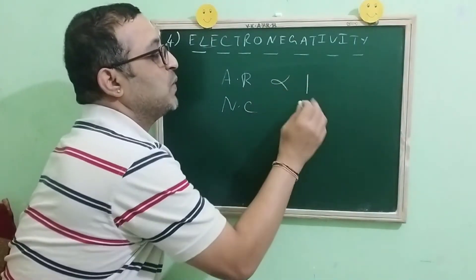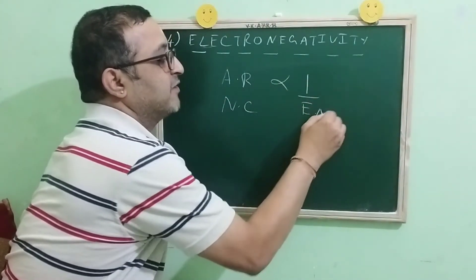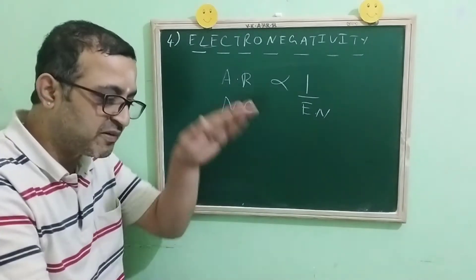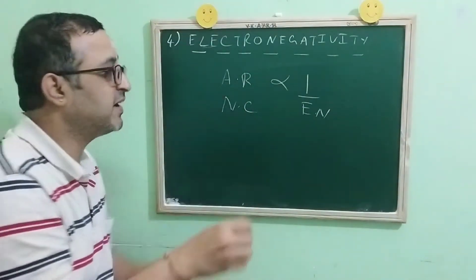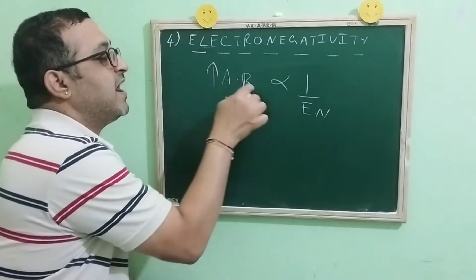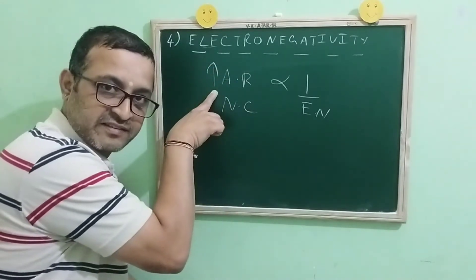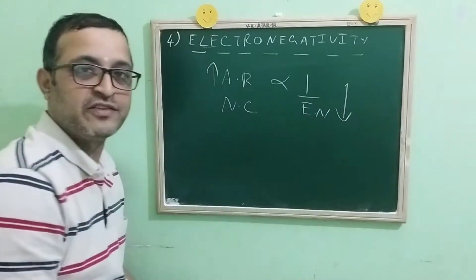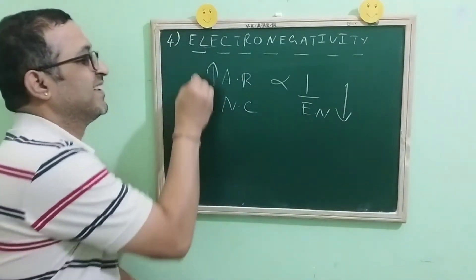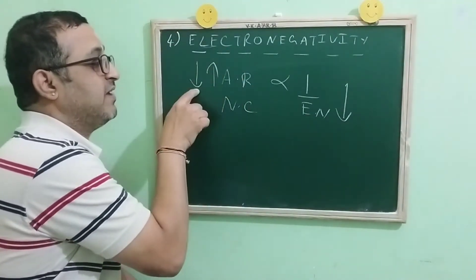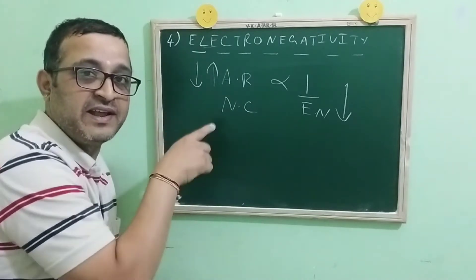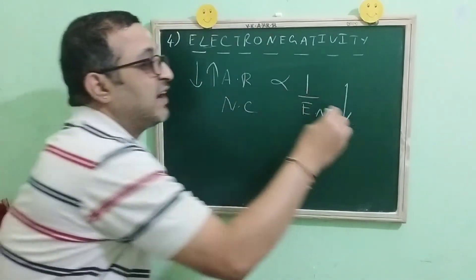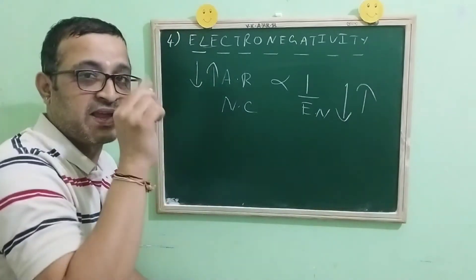The relationship between atomic radius and electronegativity is an inverse relationship. As the atomic radius increases, the electronegativity is going to decrease. In the same way, as the atomic radius decreases, the electronegativity is going to increase.